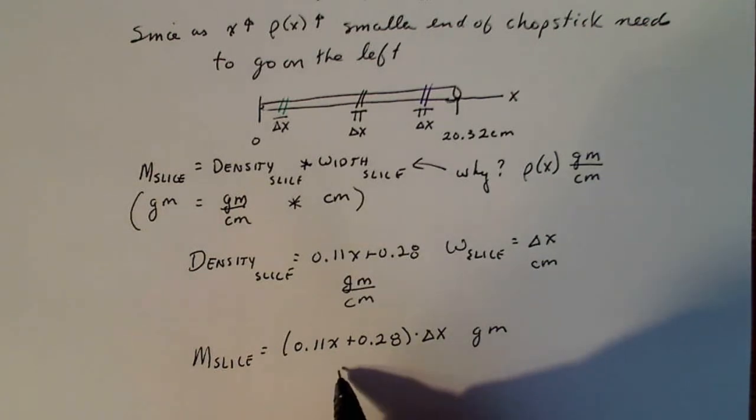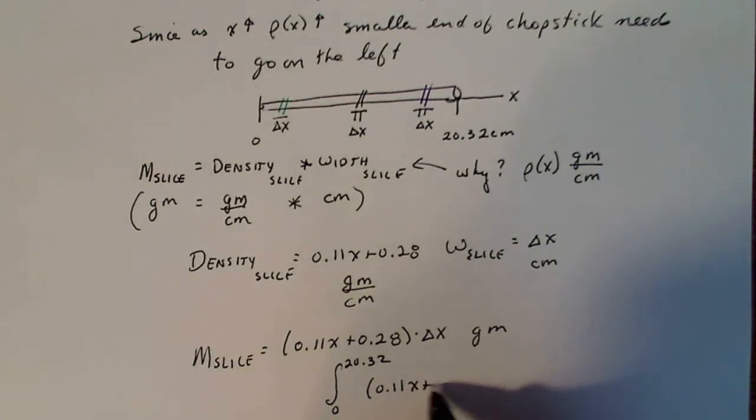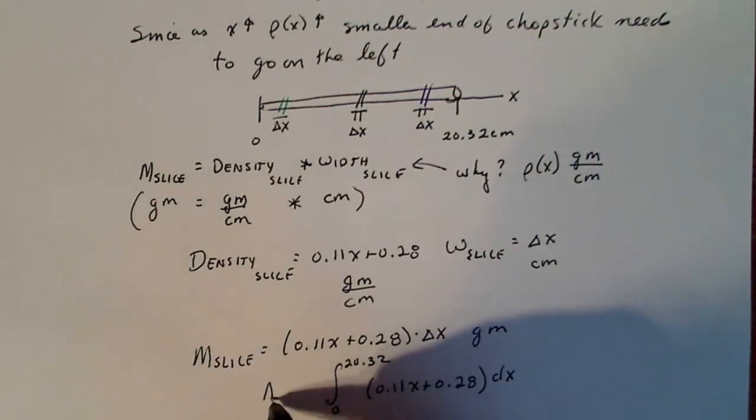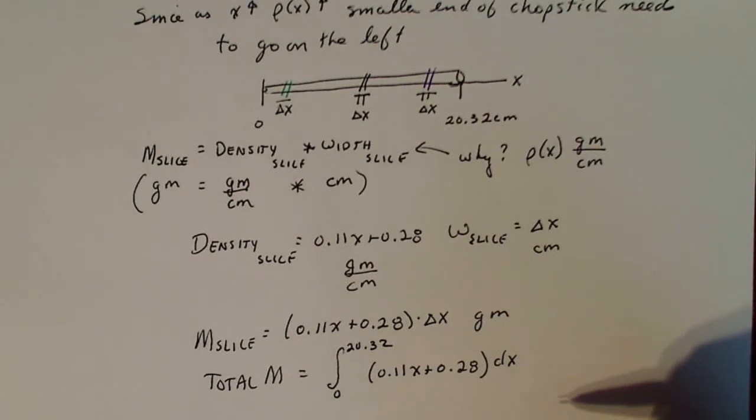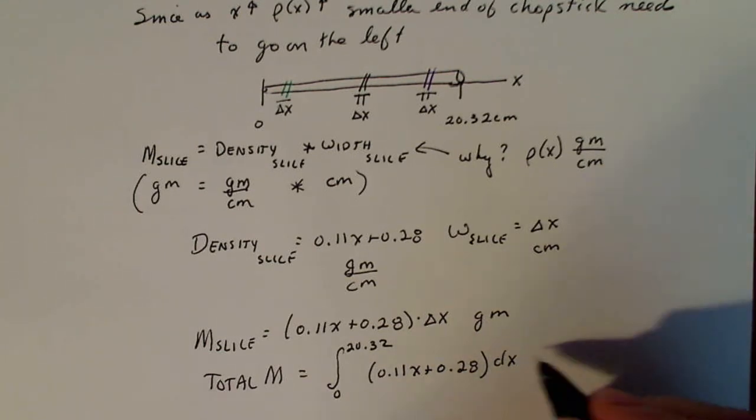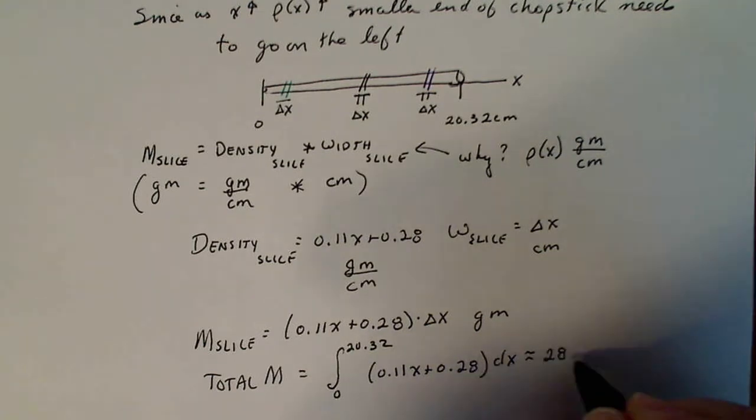Now that I have the mass on one of that slice, I'm going to sum up all the slices, the one that I chop at zero and the one that I cut at 20.32. So the integral from 0 to 20.32 of (0.11x + 0.28)dx is going to be the total mass of the chopstick. And I told you for now, just go ahead and put them in the calculator. If you want to practice doing them by hand, that's fine. I got a number approximately equal to 28.3992 grams.